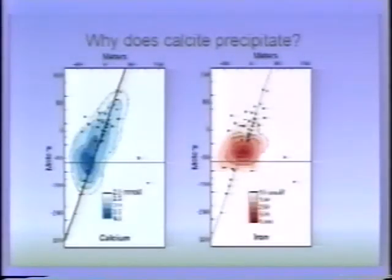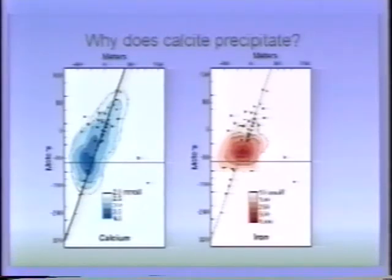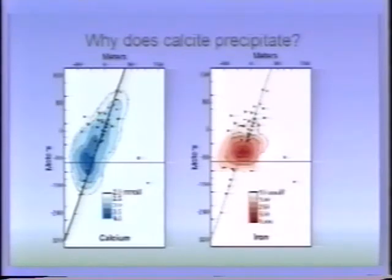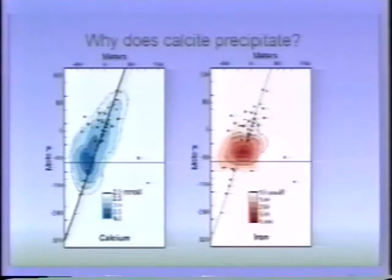So why would calcite precipitate? Up until now I thought I'd probably convinced you that calcite should be dissolving — all this acid is being produced. Well, in that area where we saw calcite precipitating, the dominant reaction that the microorganisms are doing is iron reduction. They're using ferric iron as an electron acceptor. So whereas calcium is dissolving in the spilled oil area, iron is dissolving in that very anaerobic area, and here the concentration of calcium starts to go down a little bit, just like we saw in that cross-section concentration plot.